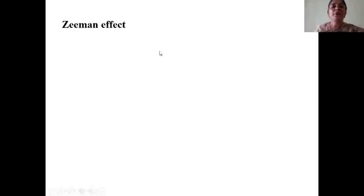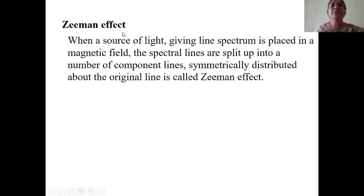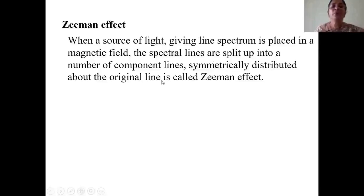Now let us see what the Zeeman effect is. When a source of light giving a line spectrum is placed in a magnetic field, the spectral lines split up into a number of component lines symmetrically distributed about the original line. This is called the Zeeman effect.